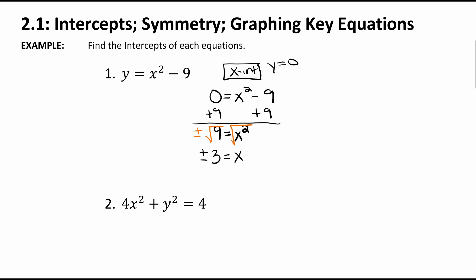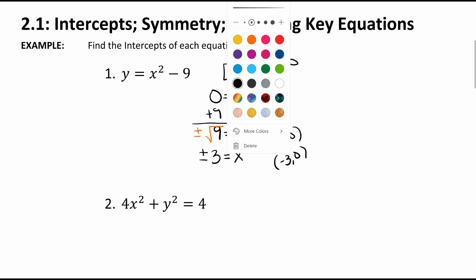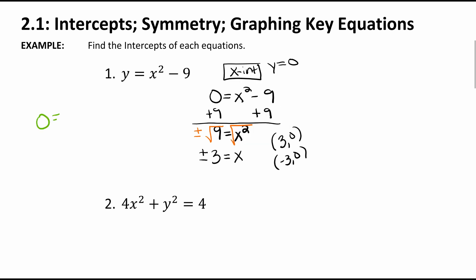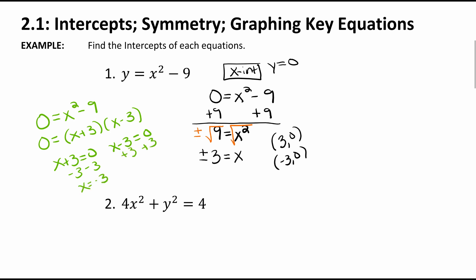Since intercepts are points, we list them as (3, 0) and (−3, 0) — the y value is always 0. Another way to solve this is by factoring. Because it's a difference of squares, you can factor it as (x + 3)(x − 3), then set each factor equal to zero to get the same answers. Do whatever method works best for you.